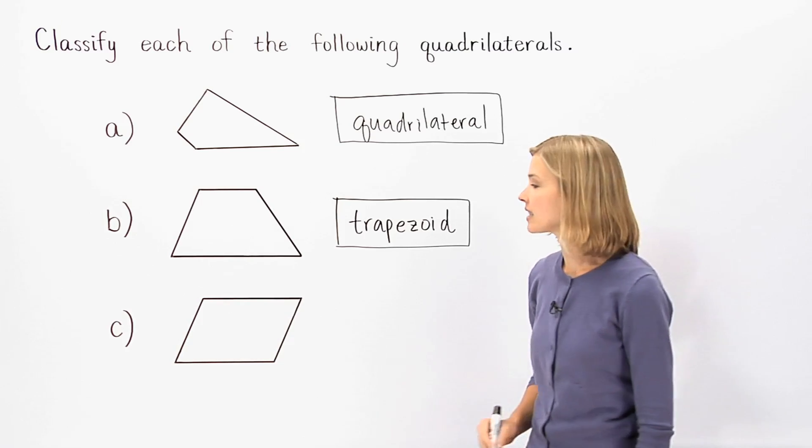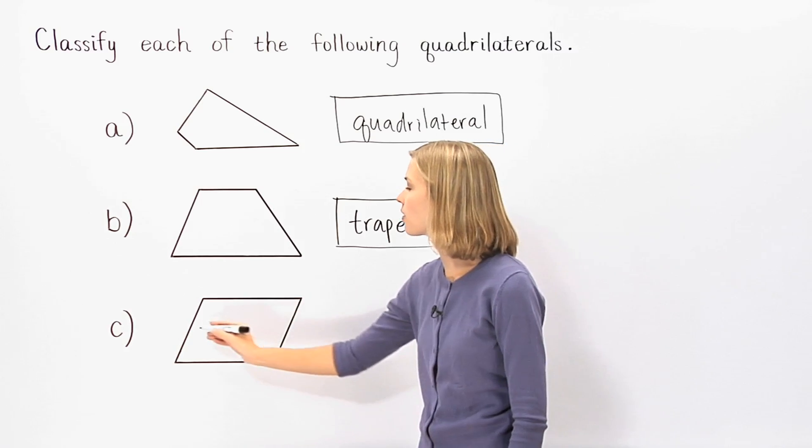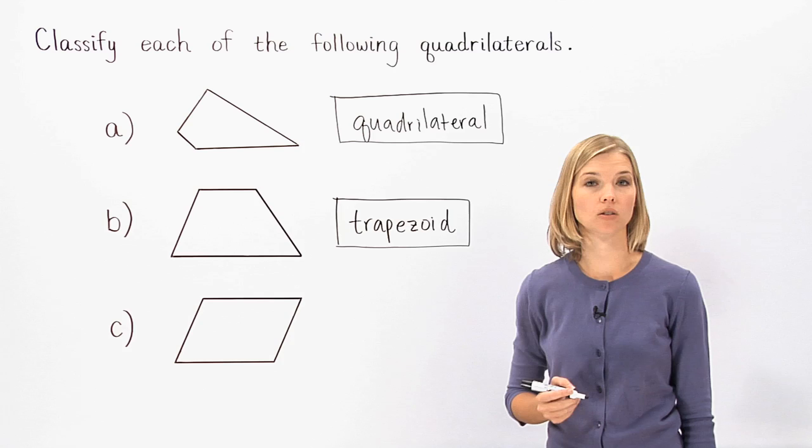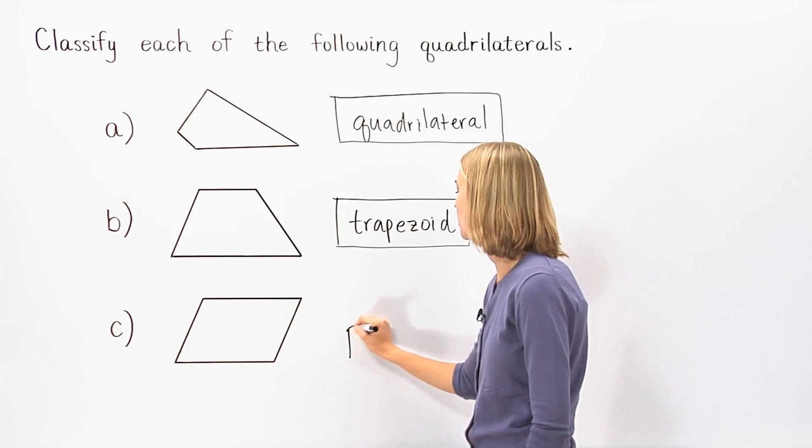Finally, we can see that the last quadrilateral has two pairs of parallel sides. A quadrilateral with two pairs of parallel sides is called a parallelogram.